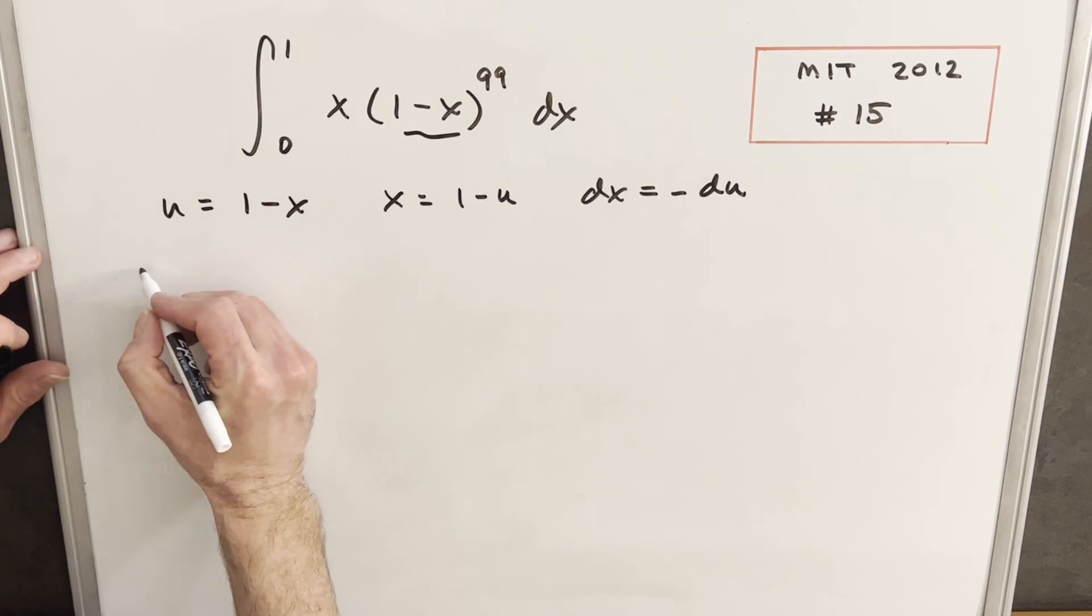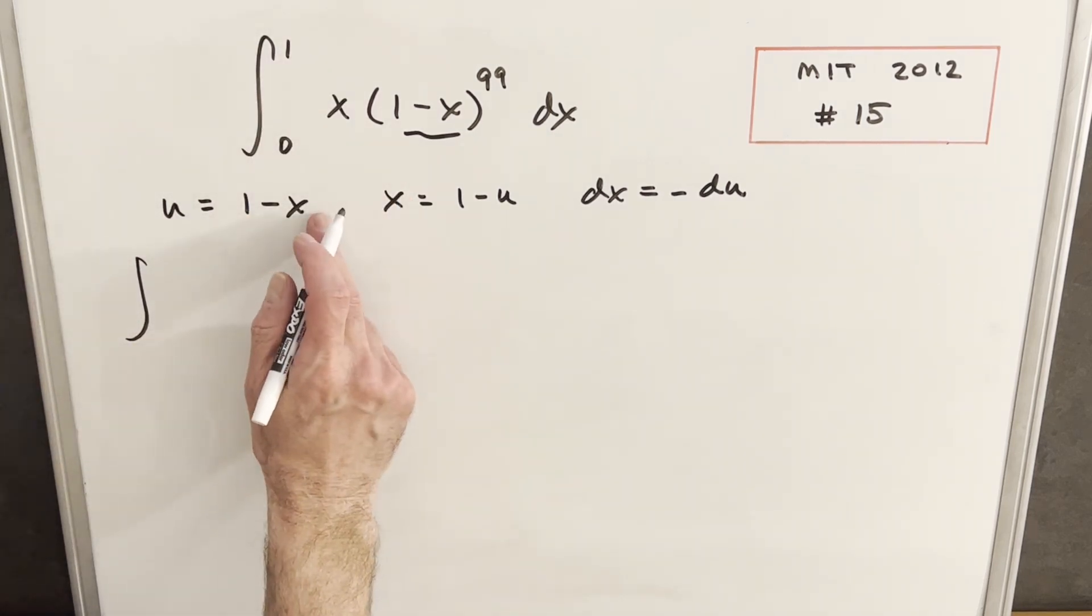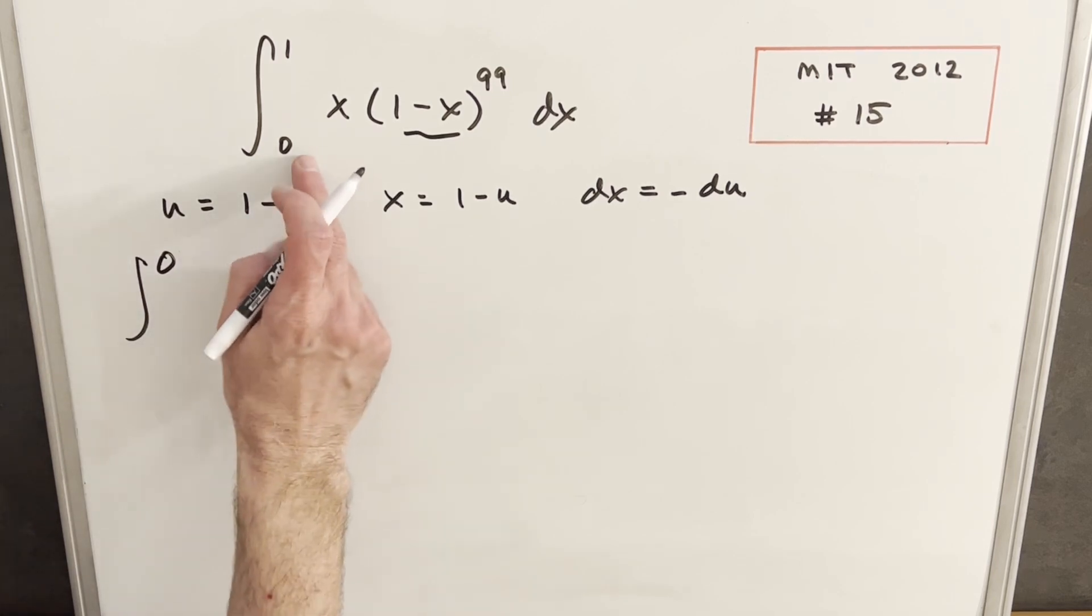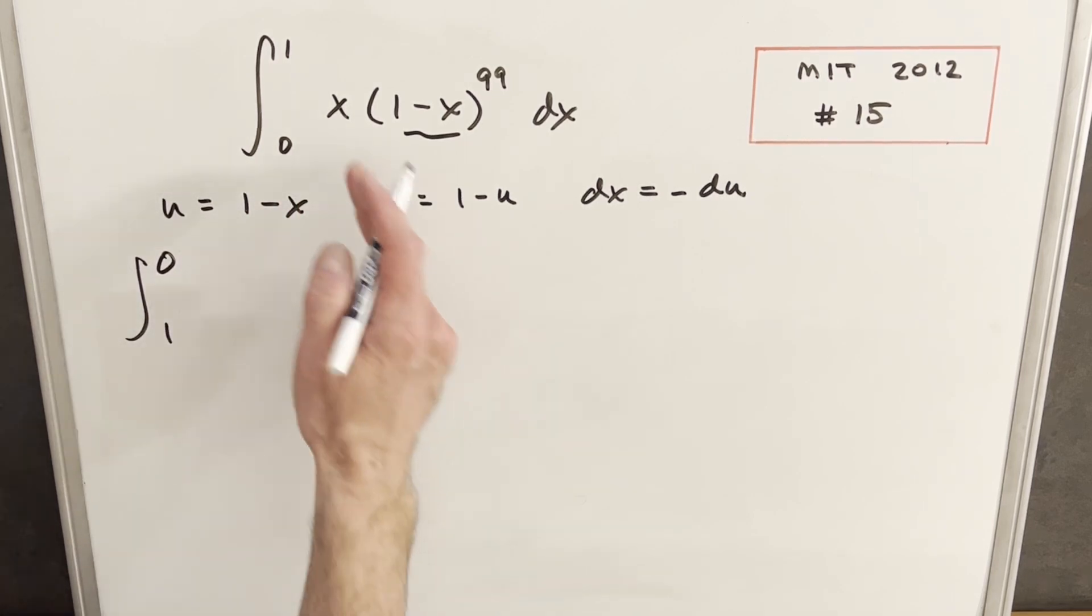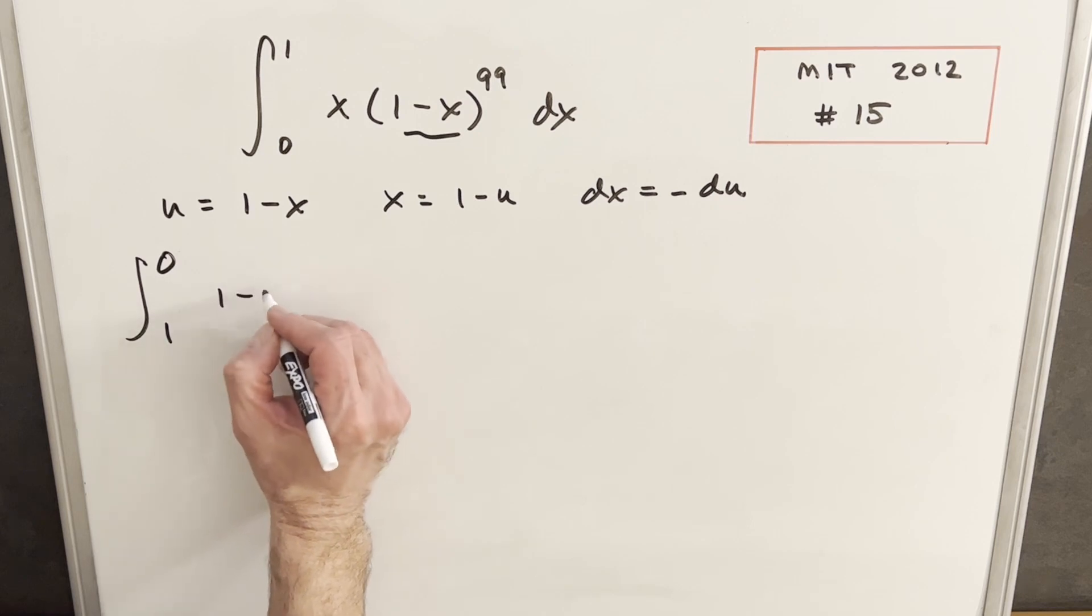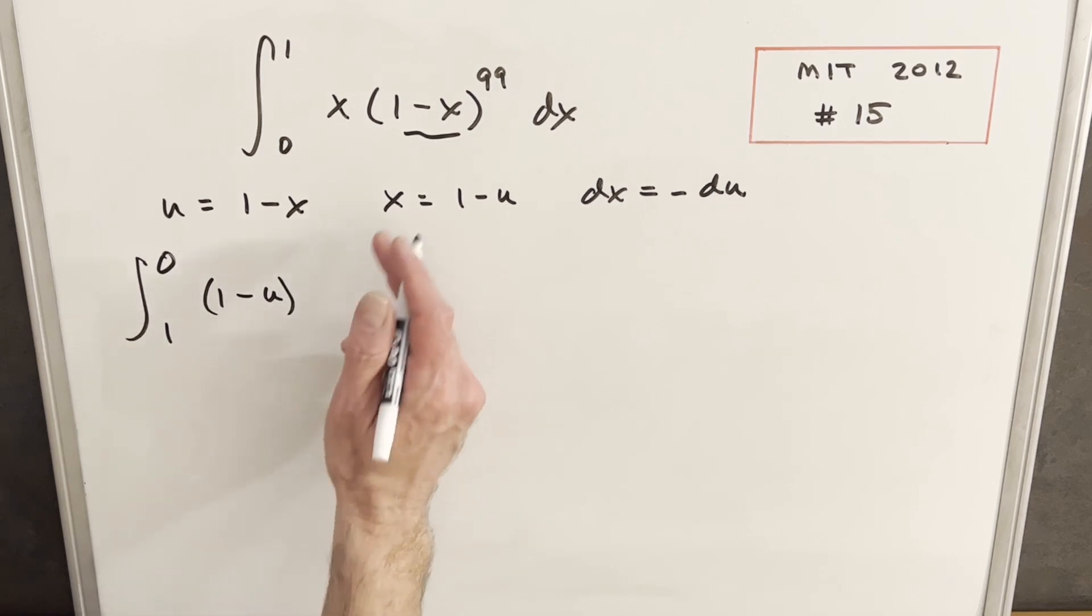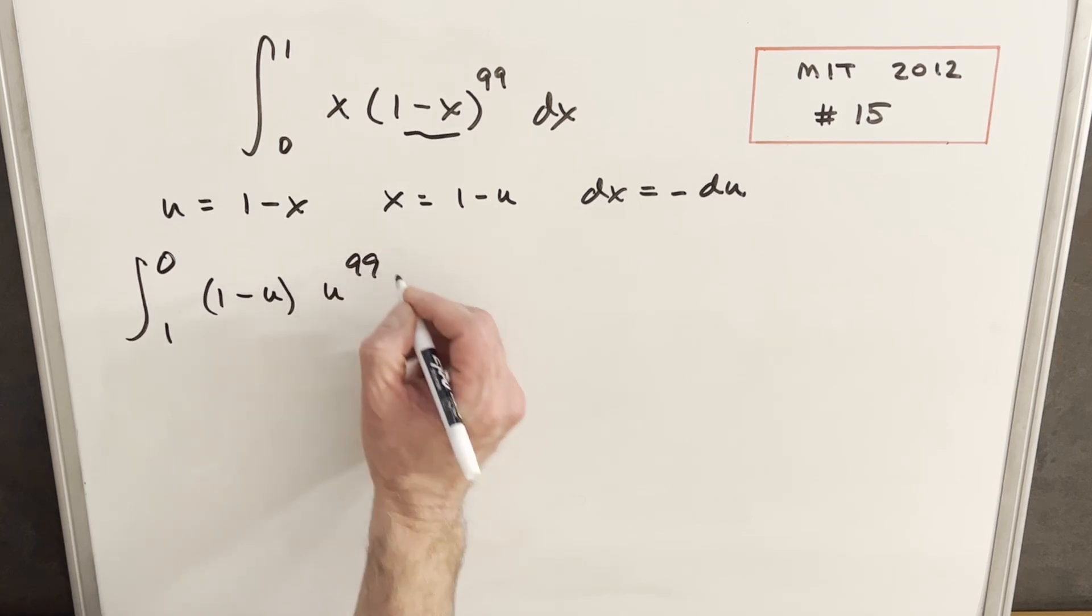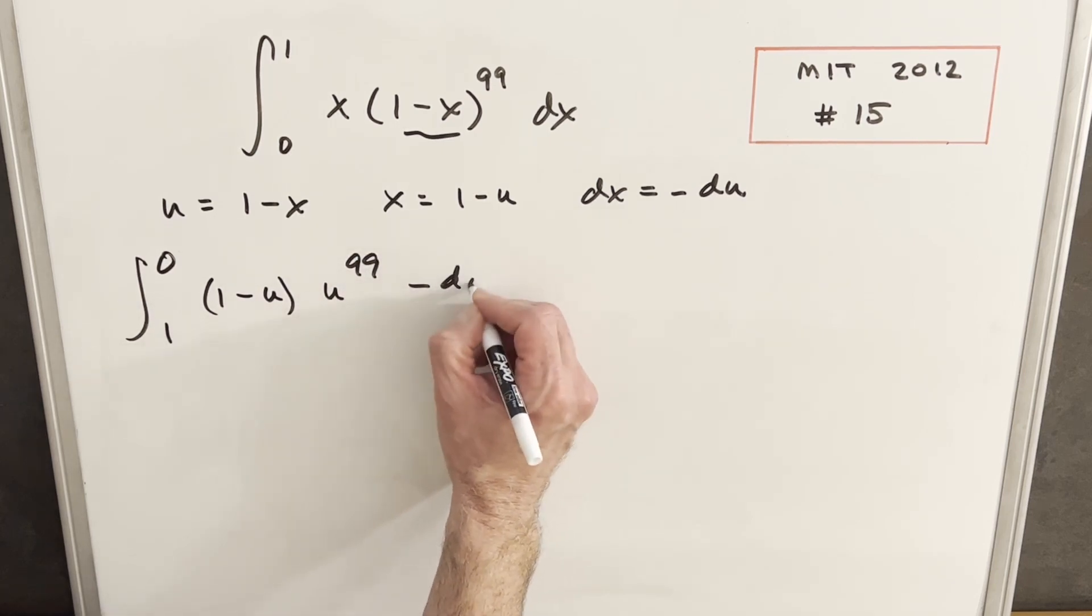So we'll make this substitution. First updating our bounds, we'll plug our 1 right in here for x, so we're going to have a 0 for our upper bound. And for the lower bound, we plug in a 0 and we get a 1. Our x value we have right here is going to be 1 minus u, and our 1 minus x is that's just going to be a u now, and we're going to have u to the 99 minus du.